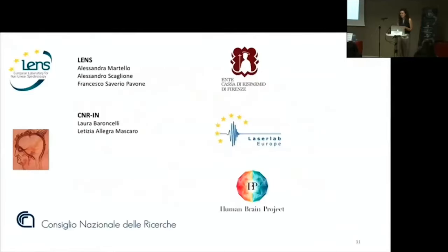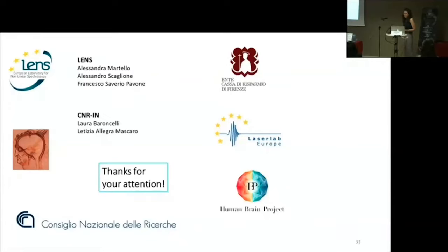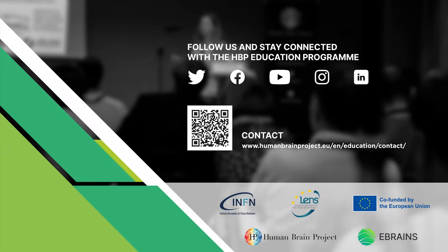Summarizing all results: shank3b heterozygous mice are characterized by a different functional network in the awake state, involving principally the barrel field cortex and visual cortex. The functional connectivity gap between wild-type and shank3b mice is brain-state dependent, and the hyperconnectivity of both intra- and inter-hemispheric connectivity is stable over time. I would like to thank all the people working on this project, and of course thank you for your attention.